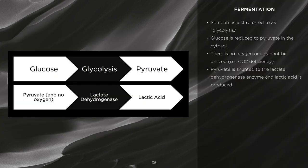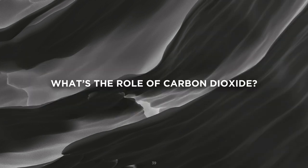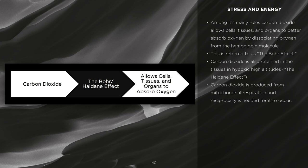What is inefficient energy? This is sometimes just referred to as glycolysis. Glucose is reduced to pyruvate in the cytoplasm; however, there is no oxygen, or oxygen cannot be utilized, such as in a carbon dioxide deficiency. Pyruvate is shunted to the lactate dehydrogenase enzyme and lactic acid is formed. What's the role of carbon dioxide? Carbon dioxide is often referred to as a waste product; however, nothing could be further from the truth. Among its many roles, carbon dioxide allows cells, tissues, and organs to better absorb oxygen by dissociating oxygen from the hemoglobin molecule — this is referred to as the Bohr effect. Similarly, carbon dioxide is retained in the tissues in hypoxic or low-oxygen high altitudes — this is referred to as the Haldane effect. Cells are essentially bracketed by the availability of glucose and oxygen, and carbon dioxide is regulating the use of both of these substances.